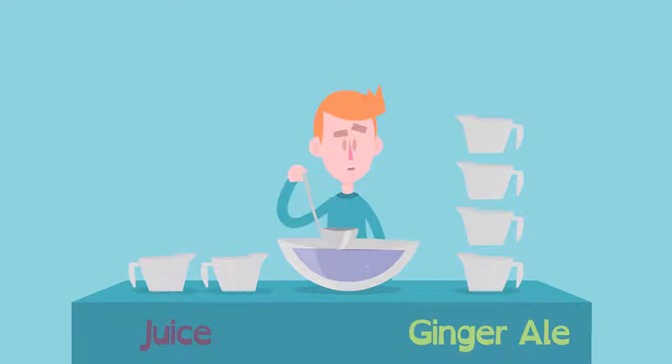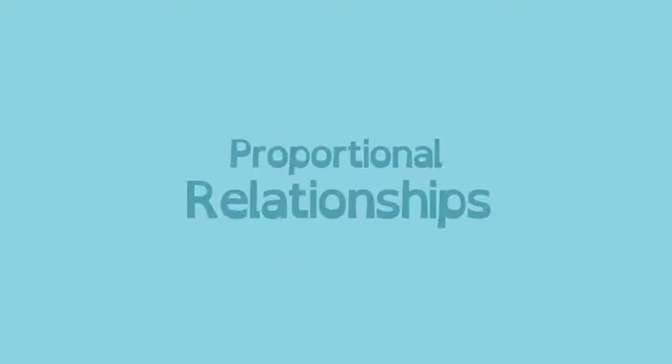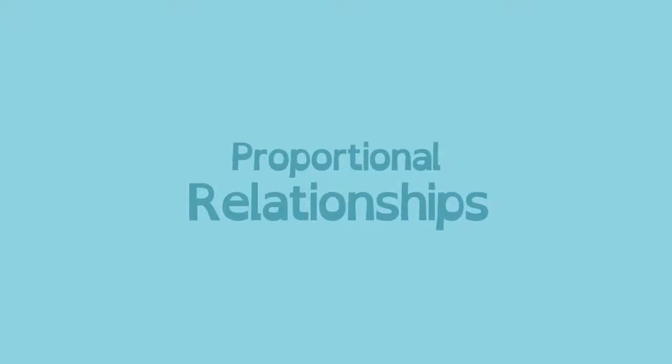And Carl's punch won't taste so great. Ratios, tables, and graphs can help us identify proportional relationships and make awesome punch.